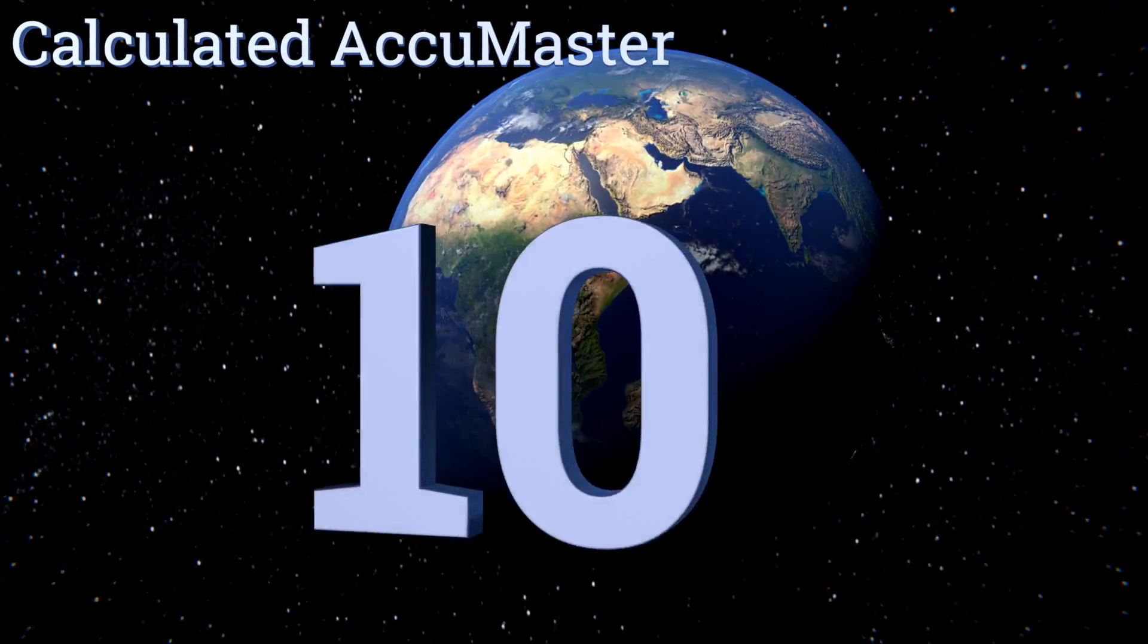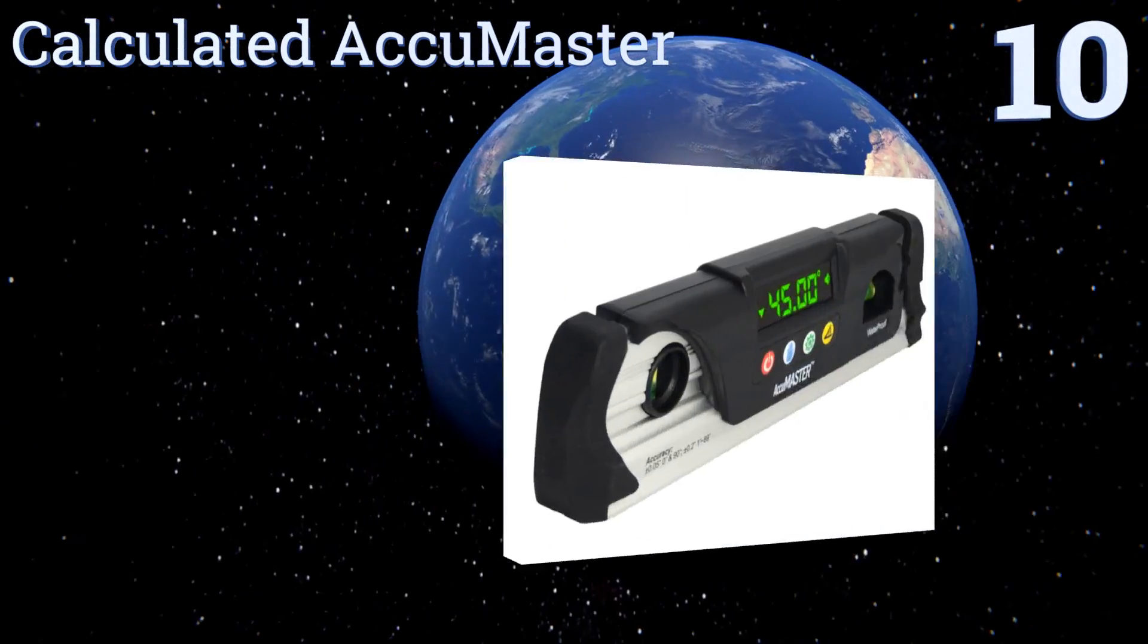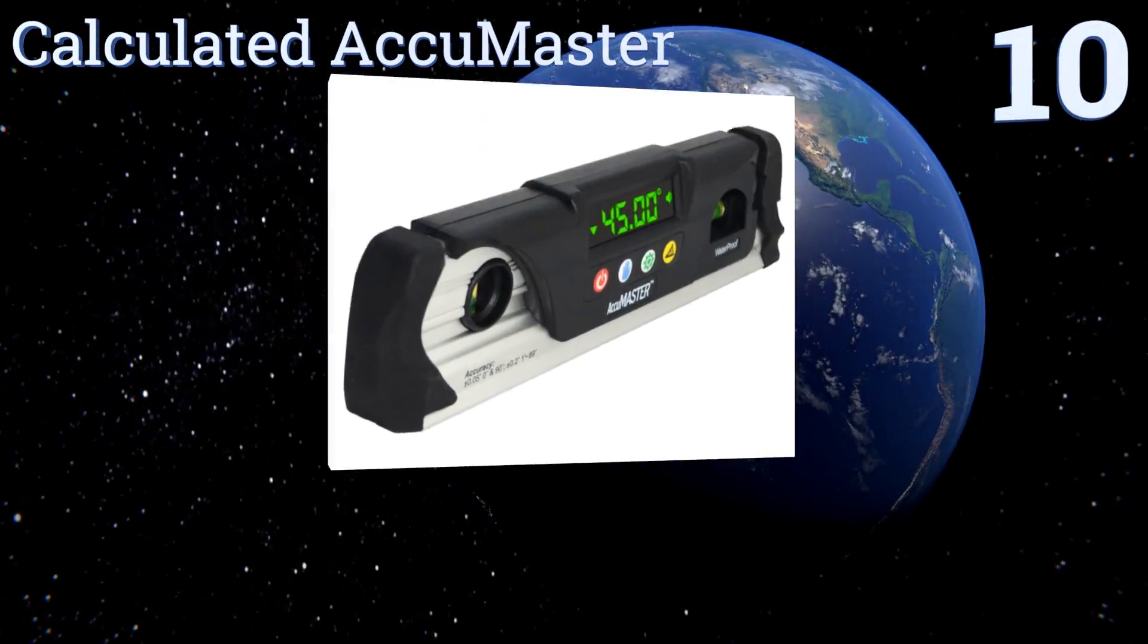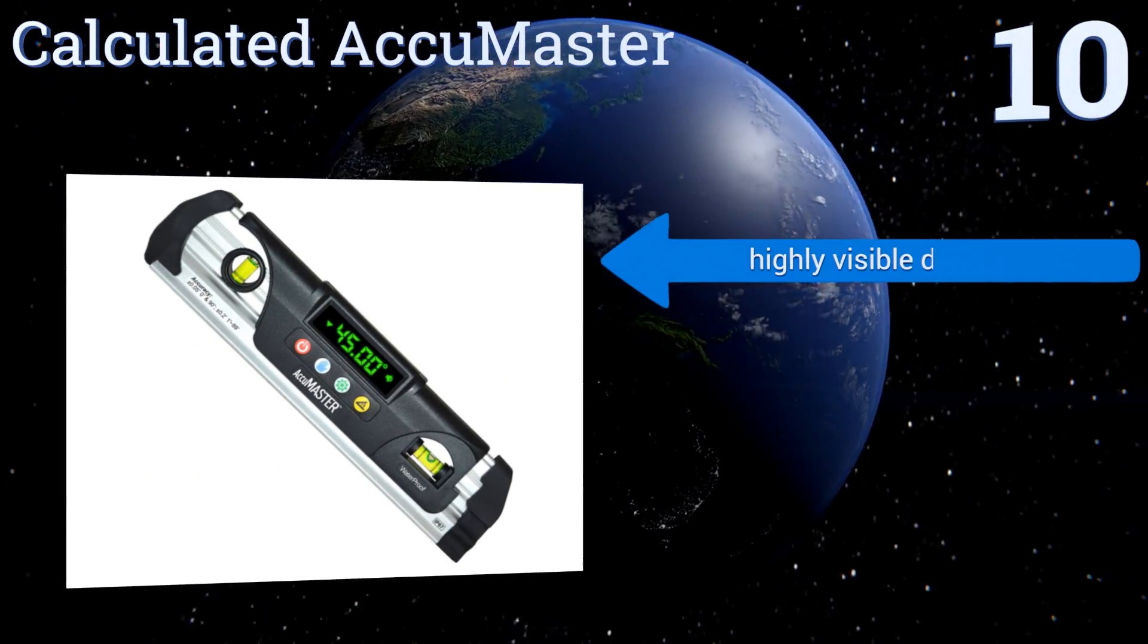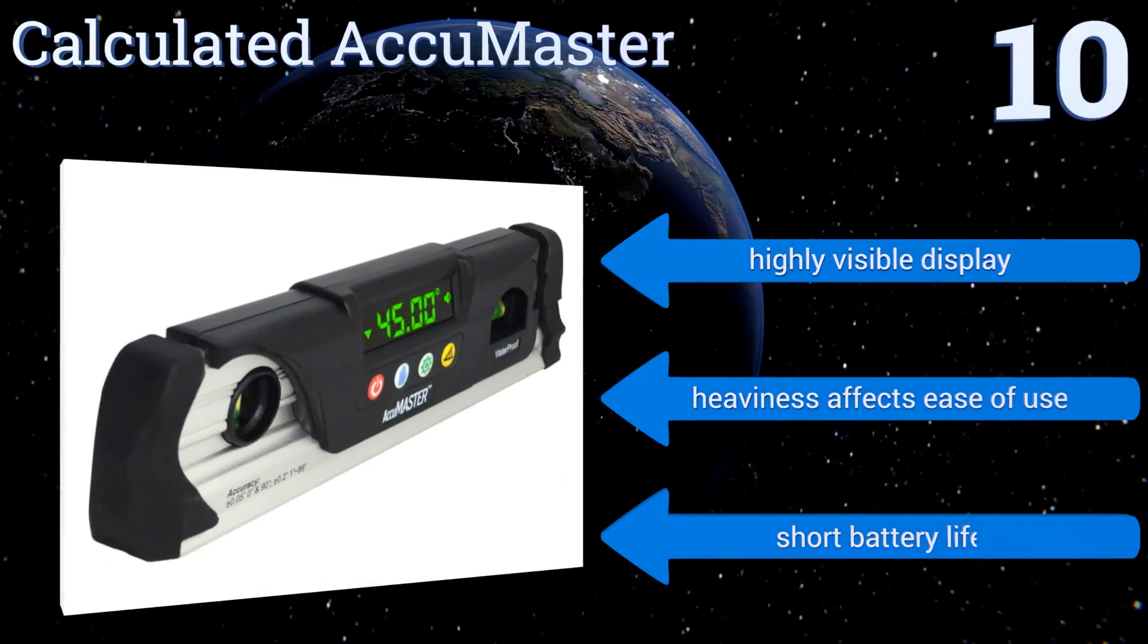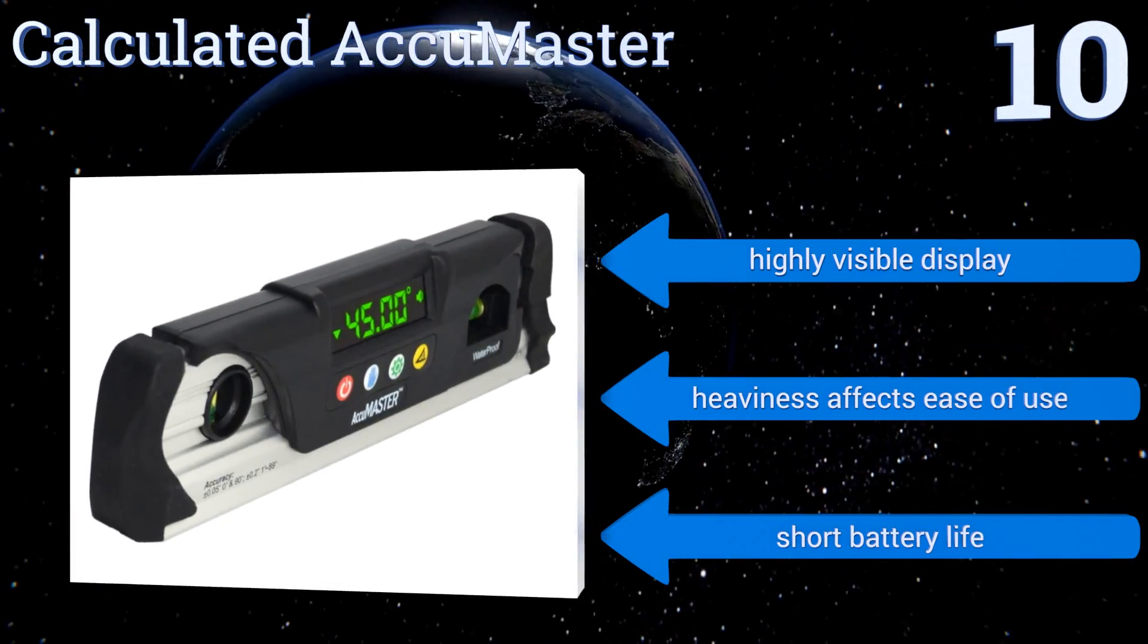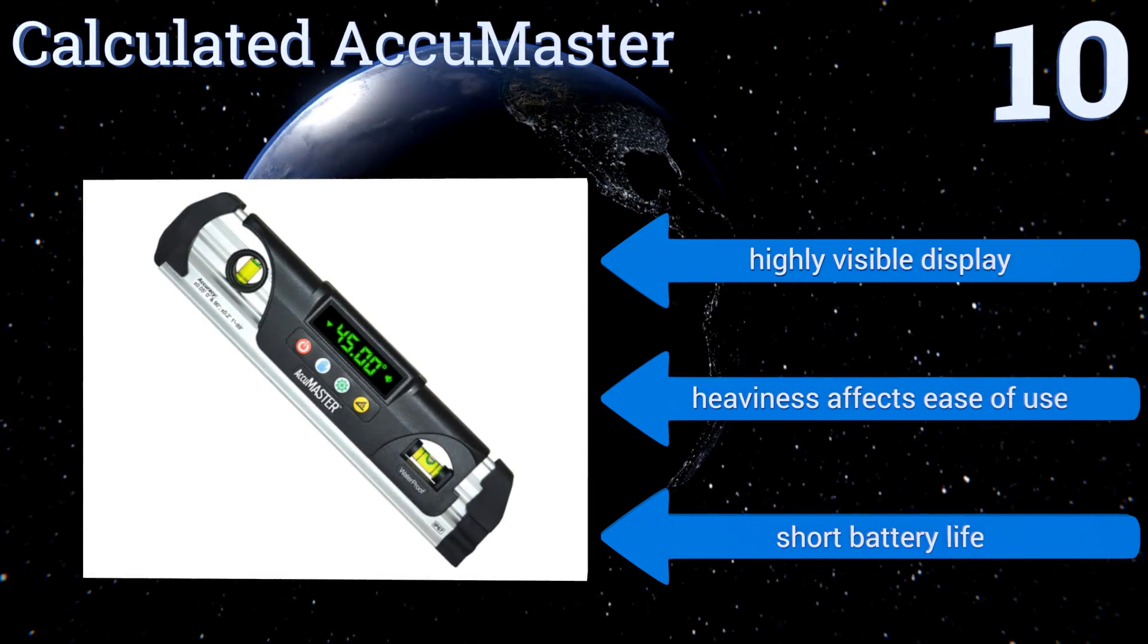Starting off our list at number 10, the Calculated AccuMaster was created for tradesmen working in less than ideal conditions. With dual functionality as a torpedo level and a digital protractor, it offers an extensive working temperature range from negative 4 to 140 degrees Fahrenheit. It comes with a highly visible display. However, its heaviness affects its ease of use and it has a short battery life.